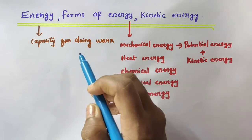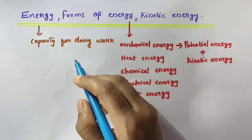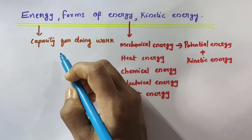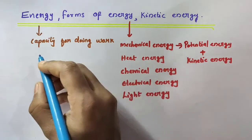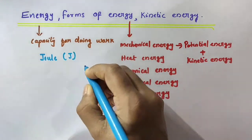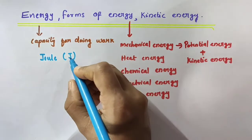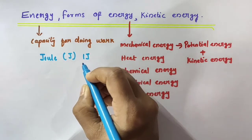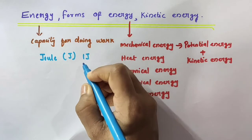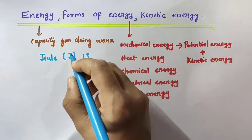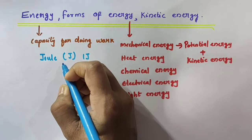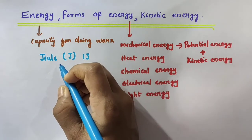The energy possessed by an object is measured in terms of its capacity for doing work. The S.I. unit of energy is Joule, represented by capital letter J. In our previous video we discussed about work, and we got the S.I. unit of work as Joule itself.